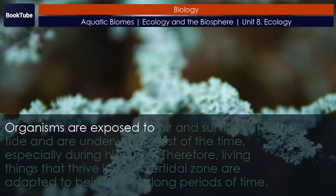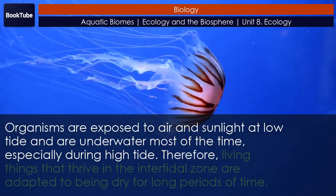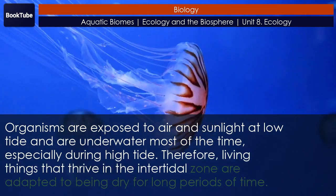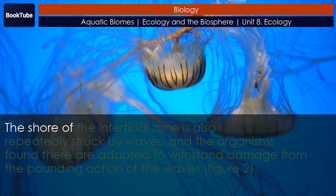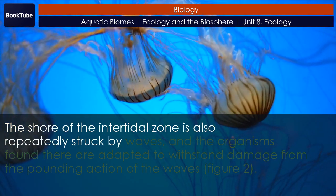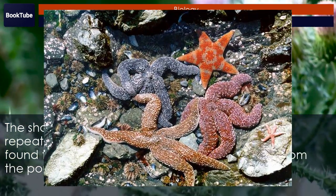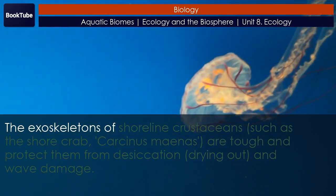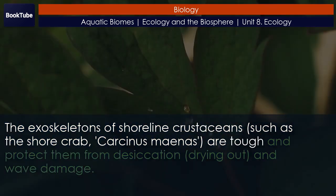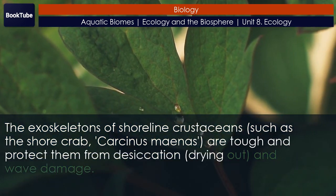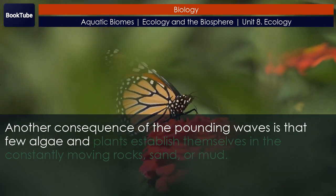Organisms in the intertidal zone are exposed to air and sunlight at low tide and are underwater most of the time, especially during high tide. Therefore, living things that thrive there are adapted to being dry for long periods. The shore is also repeatedly struck by waves, and organisms are adapted to withstand damage from the pounding action of the waves. The exoskeletons of shoreline crustaceans such as the shore crab Carcinus maenas are tough and protect them from desiccation and wave damage. Another consequence of the pounding waves is that few algae and plants establish themselves in the constantly moving rocks, sand, or mud.